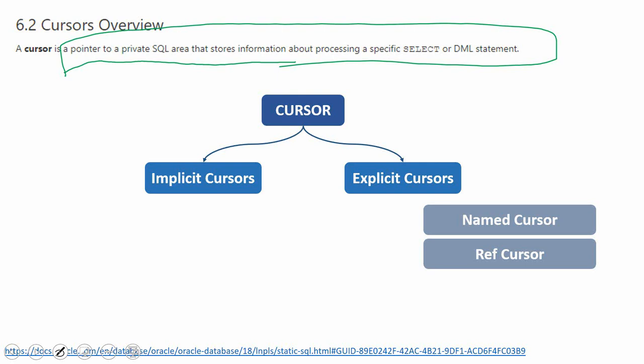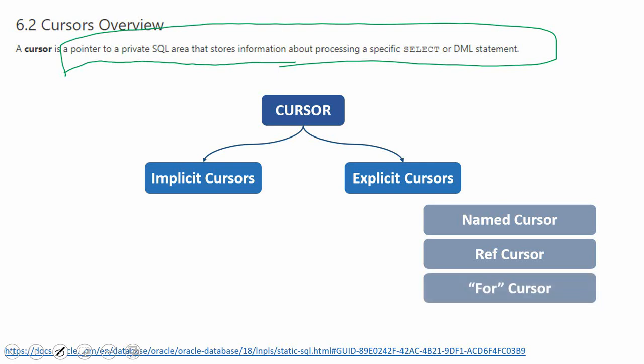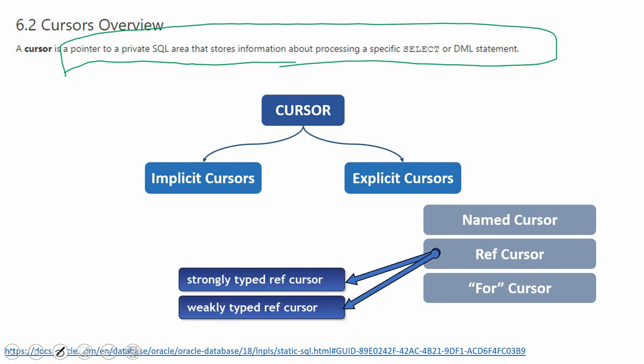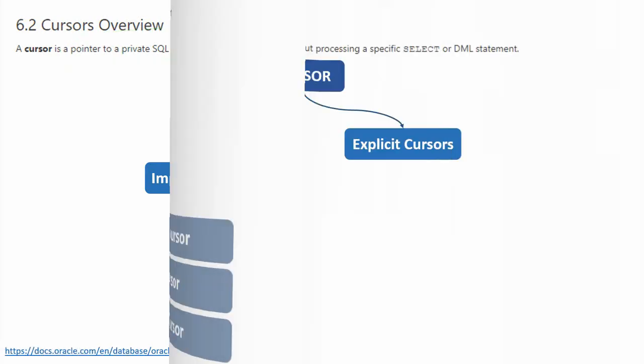Within explicit cursors, there is also the reference cursor type, and within reference cursors there are two more subtypes: strongly typed ref cursor and weakly typed ref cursor. I will talk about those in detail in subsequent video sections. At a high level for interview purposes, you need to say that cursors are broadly classified into implicit cursors and explicit cursors.